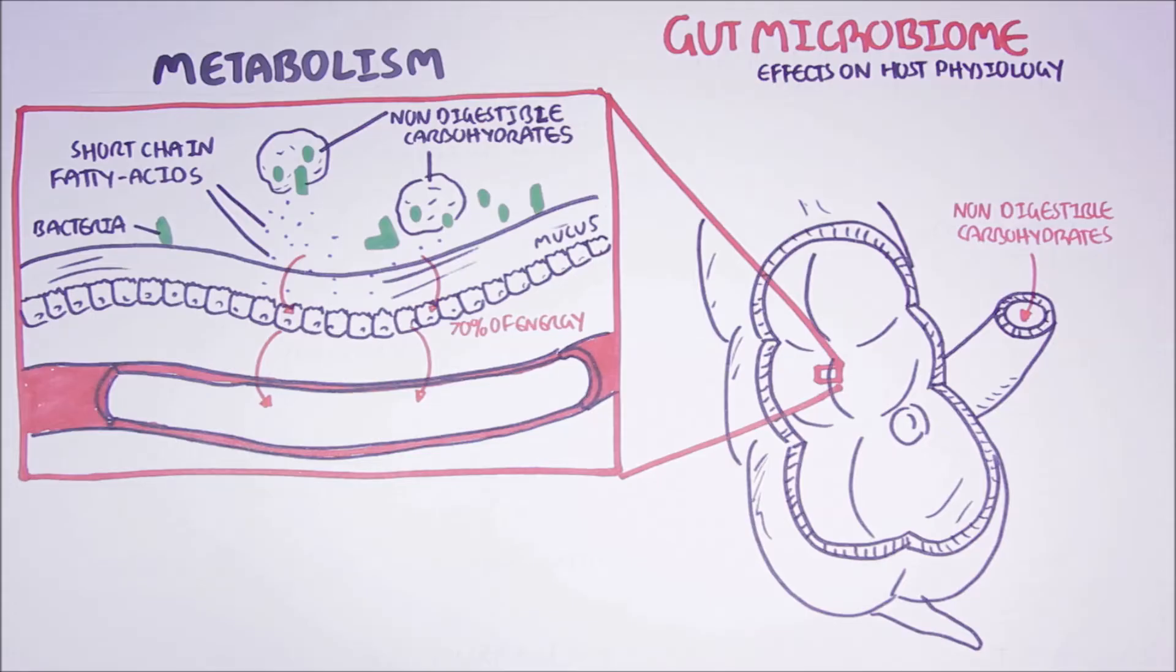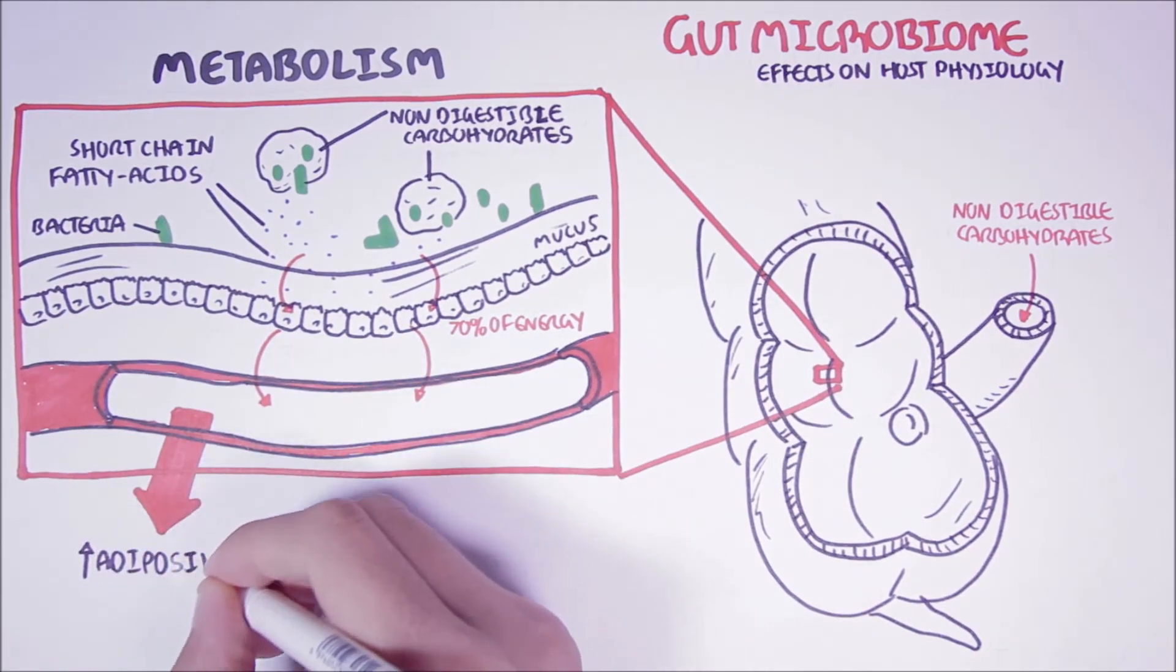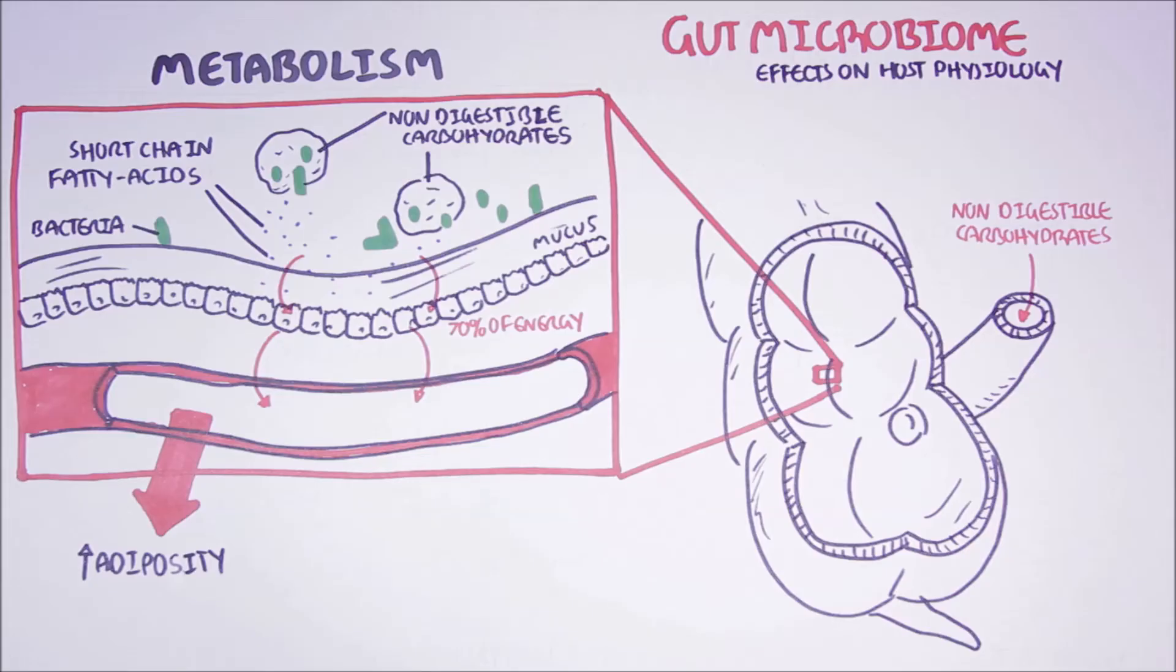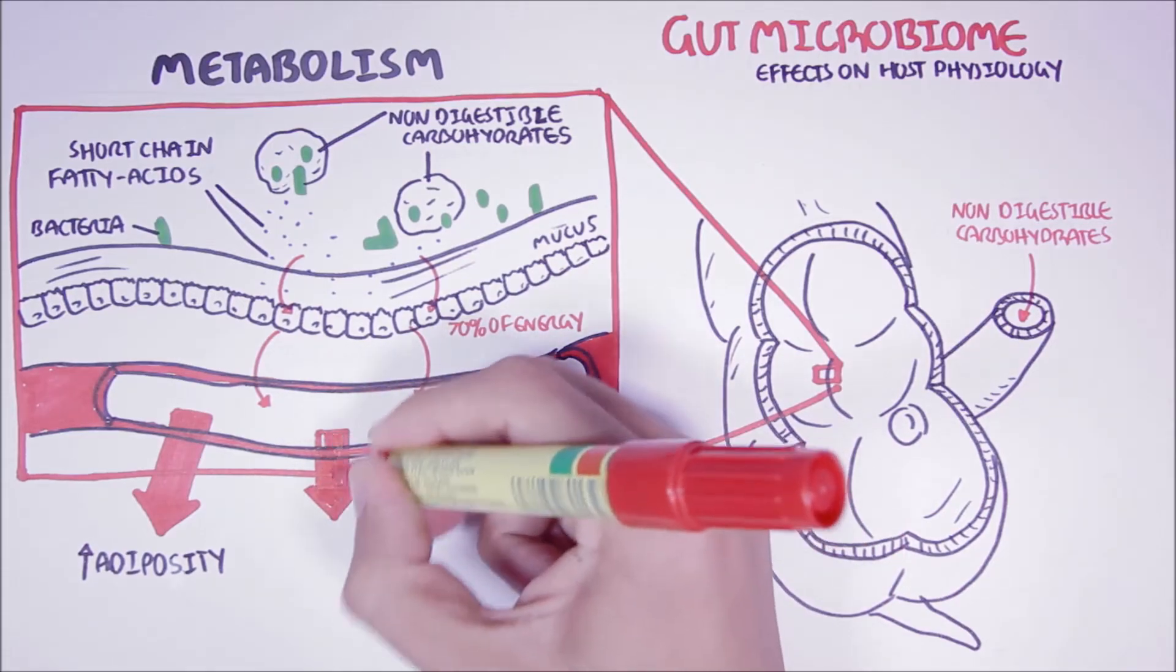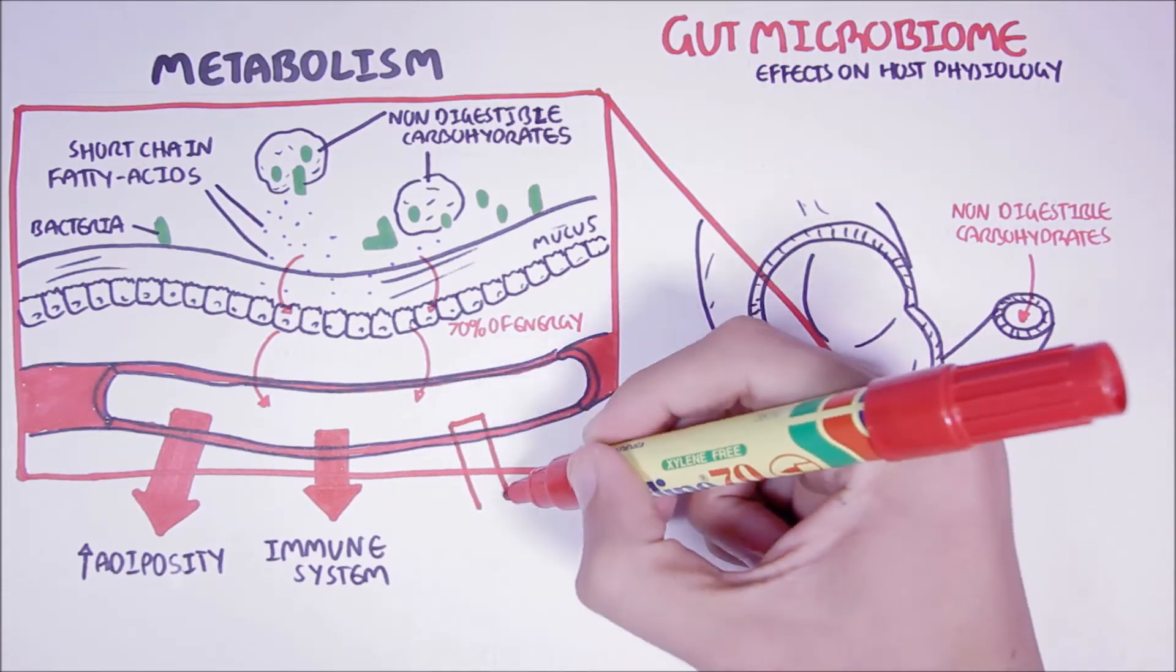Short-chain fatty acids that are absorbed into the blood can have other effects around the body. There is some evidence that short-chain fatty acids will influence adiposity by increasing lipogenesis. Short-chain fatty acids have also shown to influence the immune system in many ways. As well as, they have been shown to play a key role in the health of colon cells.